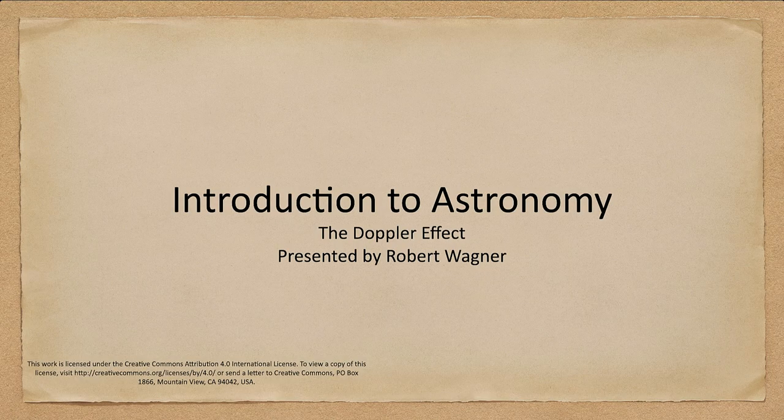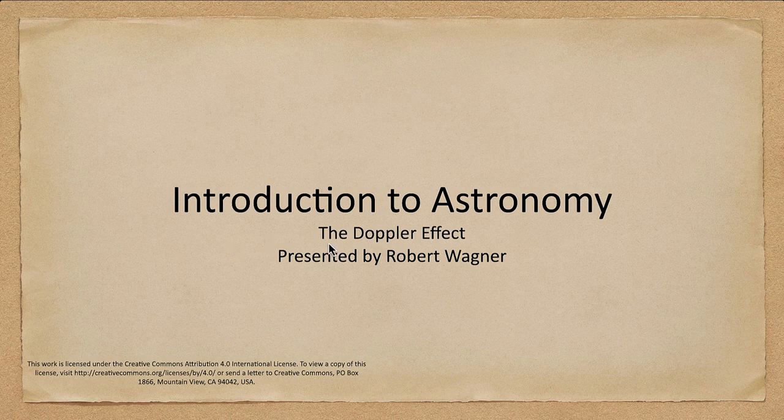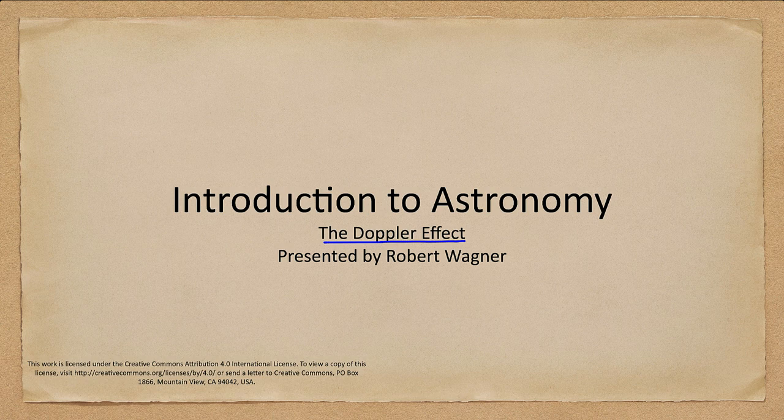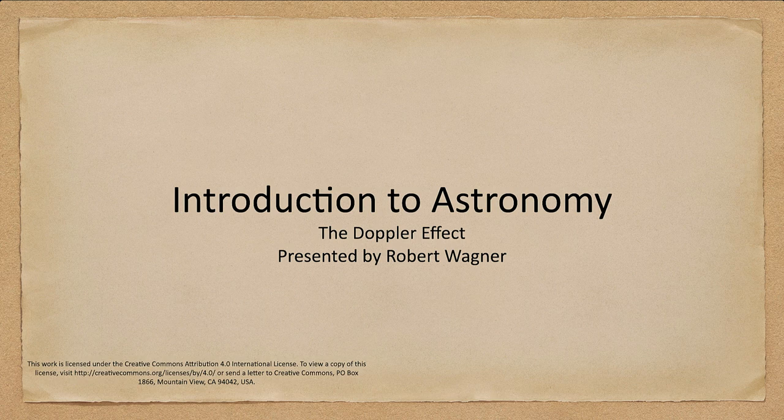Greetings and welcome to the introduction to astronomy. In this lecture we are going to talk about the Doppler effect, and this is another way we can use spectral lines. In this case we use them to determine velocities, how we can determine how fast something is moving in space.